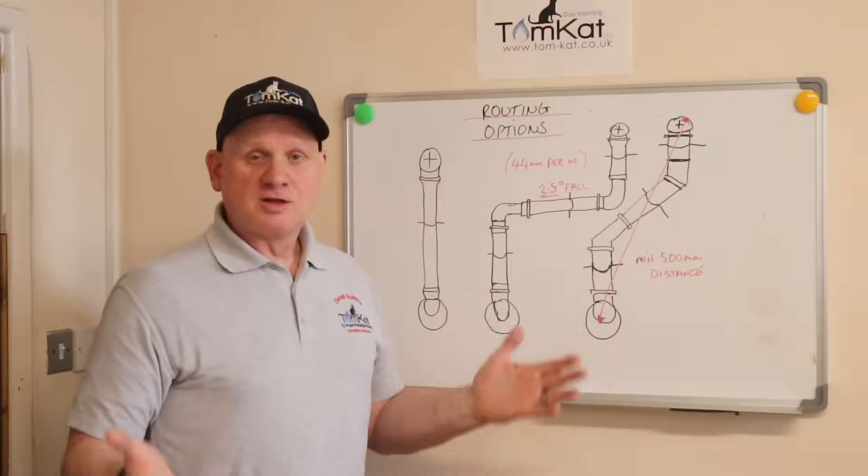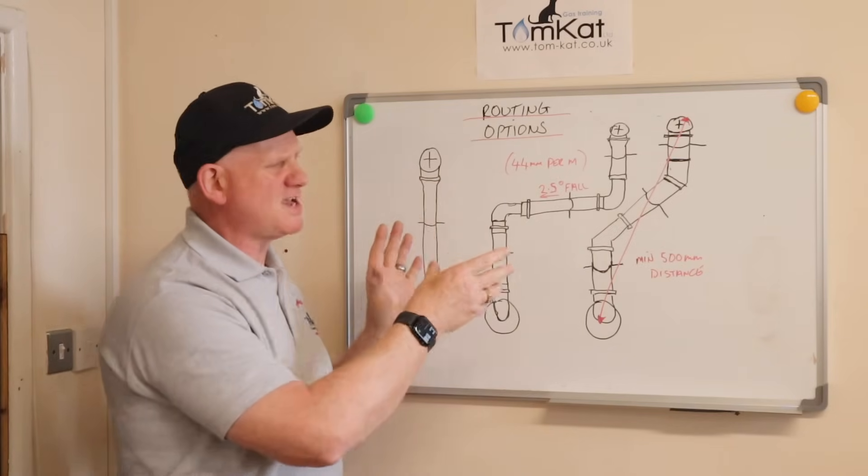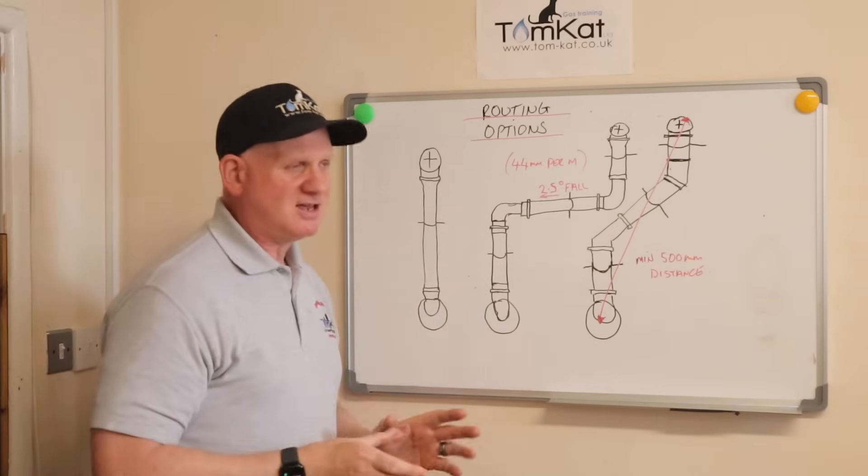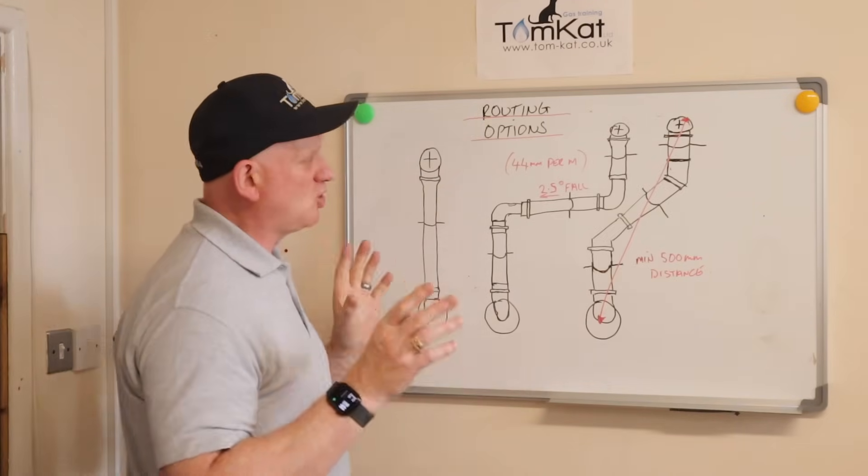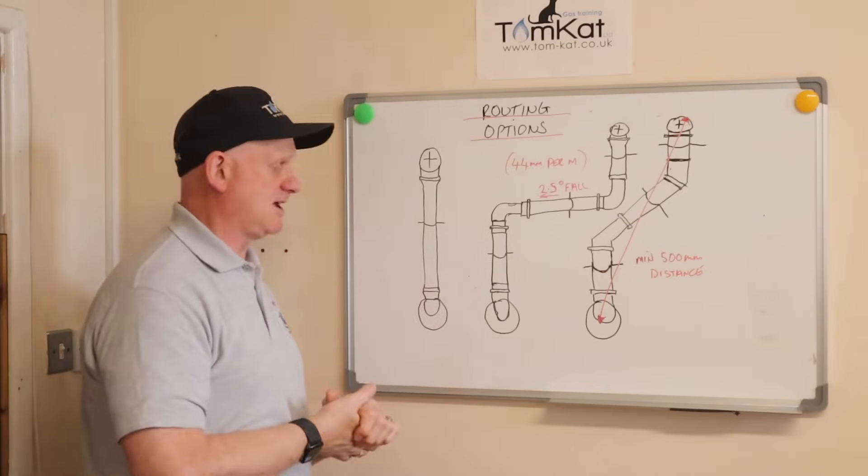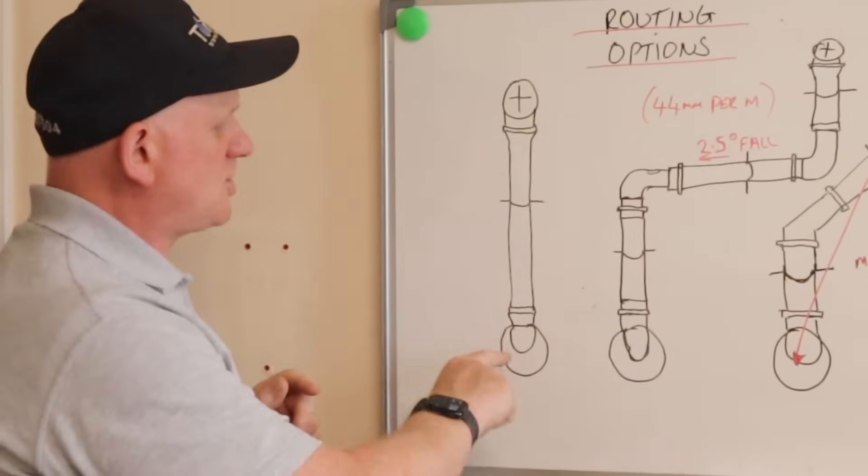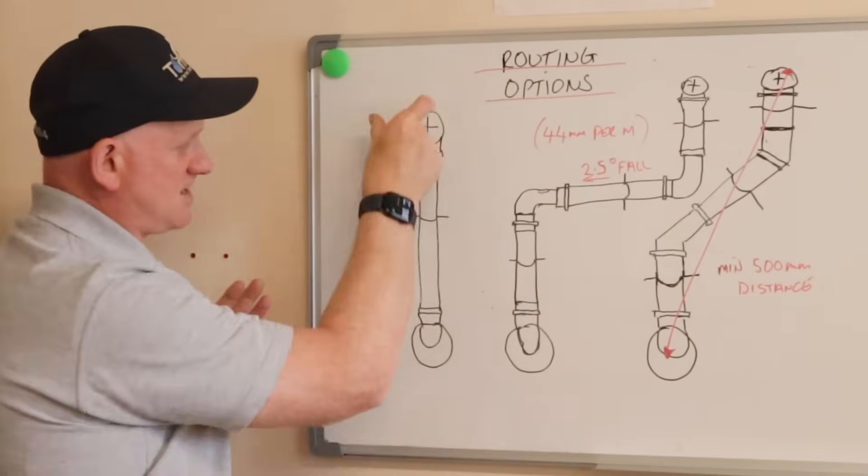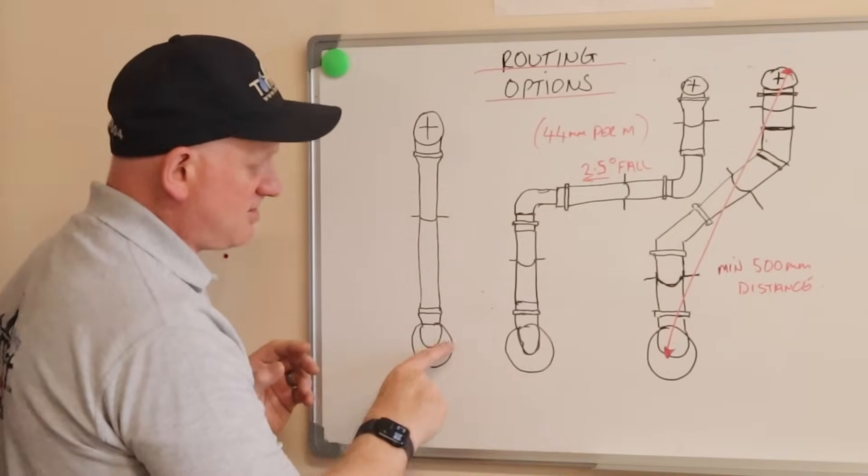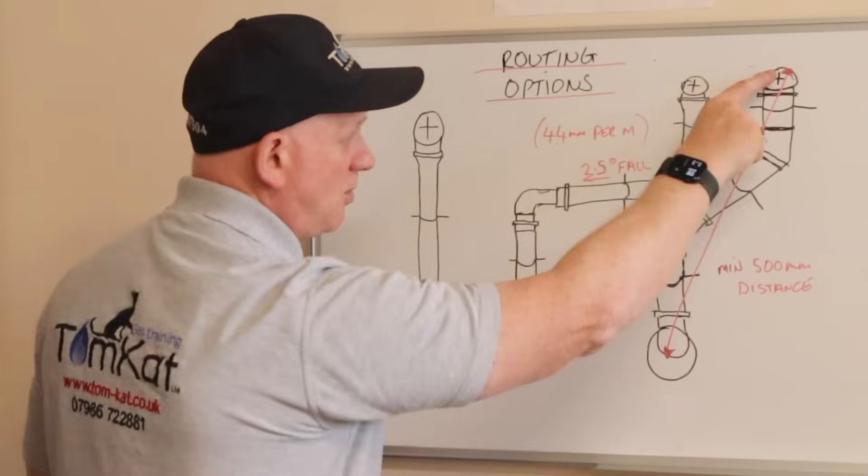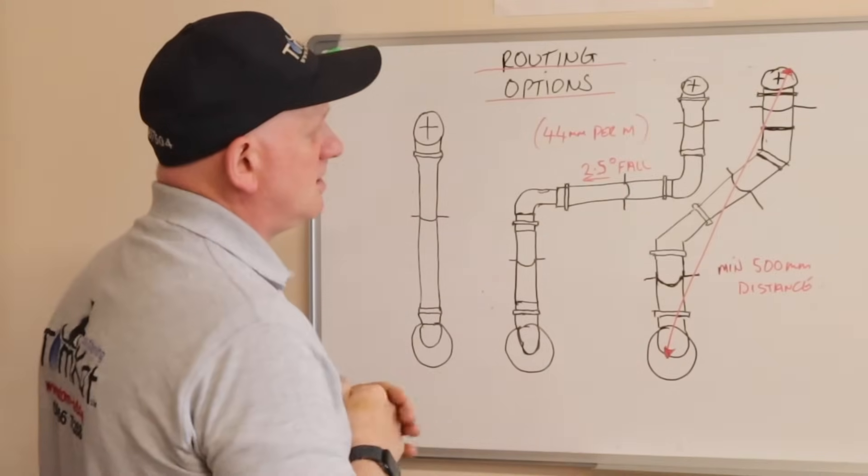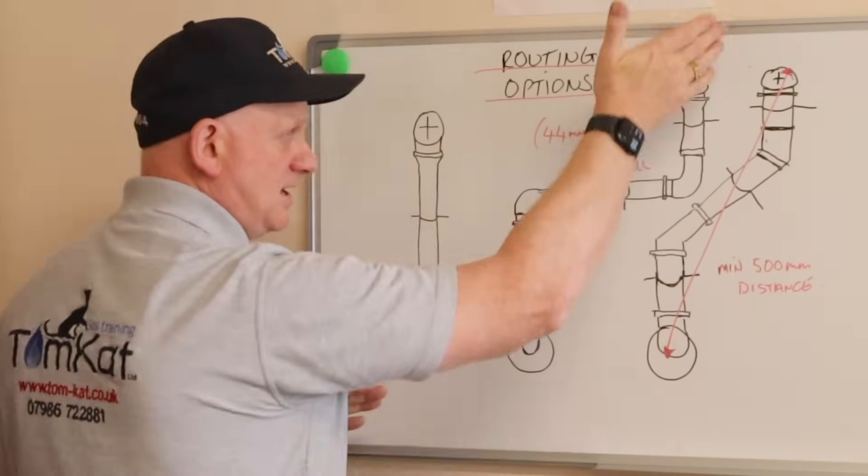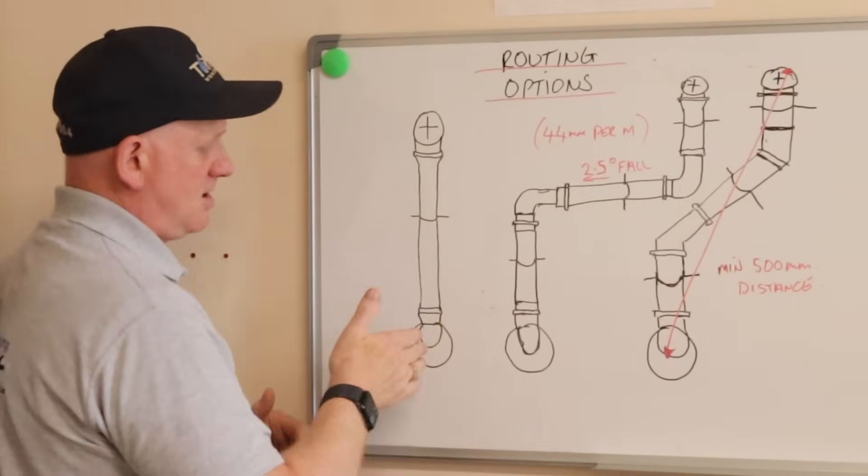So let's have a look at the routing options. Now this is pretty much standard with most of the boiler manufacturers, but again, check the manufacturer's instructions before you install a plume management kit. Now, most of them want you to go up before you go across, if that makes sense. So this is the standard plume management kit. Remember, from the centre of your terminal to the top of the bend at the top of the plume management kit it has to be more than 500mm in a diagonal.